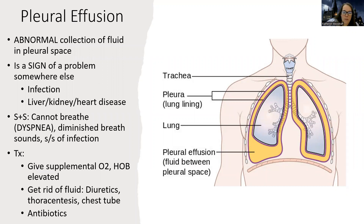Pleural effusion: always think about where the problem is happening. Pleural effusion is fluid accumulating in the space between the outer and inner sac of the lung — the pleural space. It's usually an indication that there's a problem somewhere else.